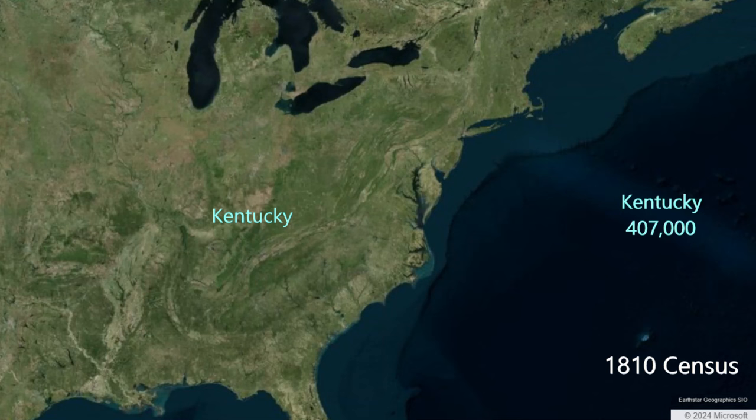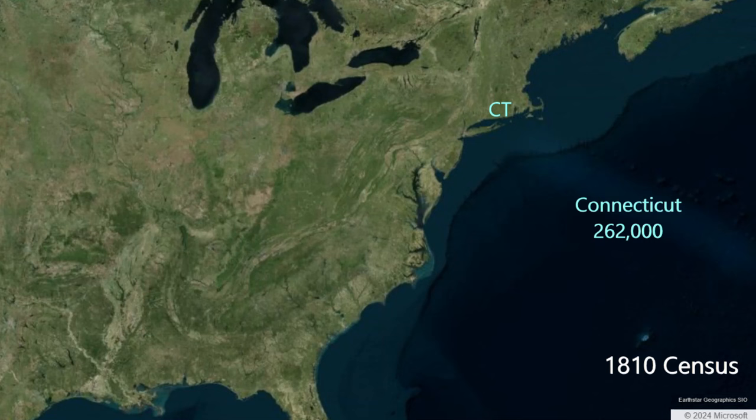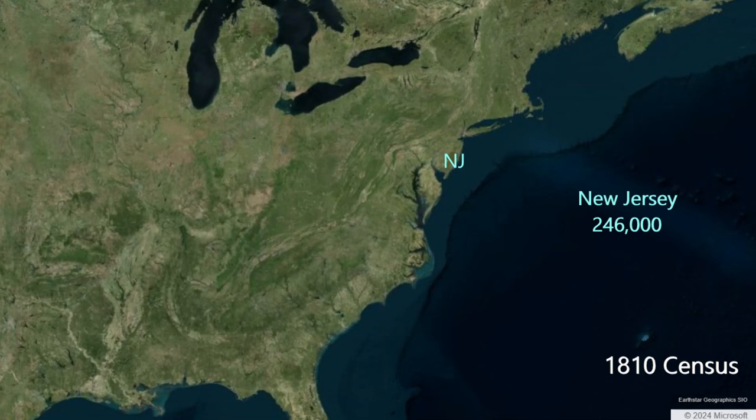Maryland had 381,000 residents in 1810. Connecticut is a little state with a large population of 262,000. Georgia, the state furthest south in 1810, has a population of 251,000. New Jersey has 246,000 residents in 1810, just larger than New Hampshire with 214,000. Tennessee claims 262,000 people at this time.